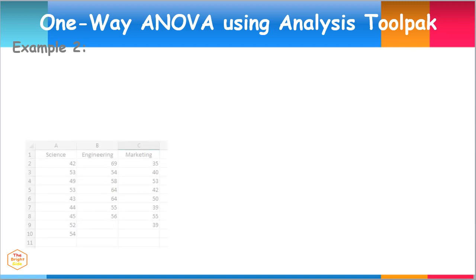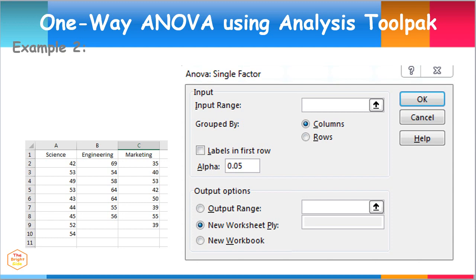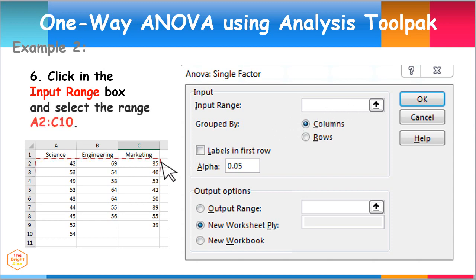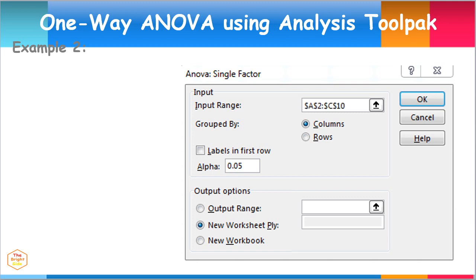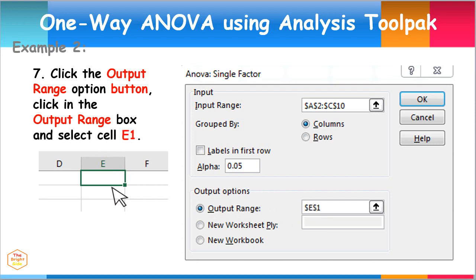Let's input the data for salaries of people with various degrees. To do this, click in the Input Range box and select the range of cells from A2 to C10. Next, click the Output Range option button, then click in the Output Range box and select cell E1. This provides the location for the resulting output. Click OK.